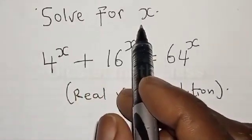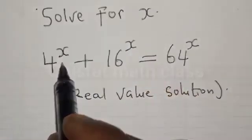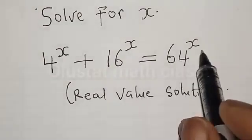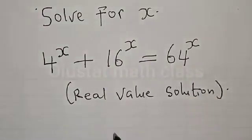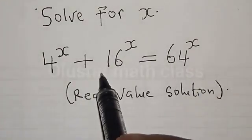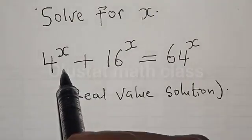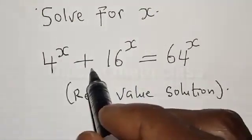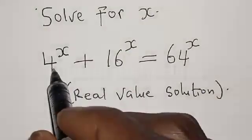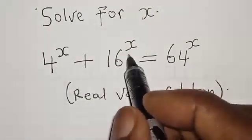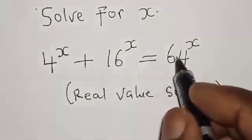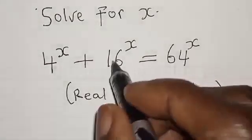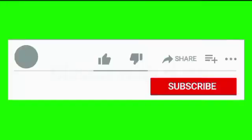Solve for x: 4 raised to power s plus 16 raised to power s is equal to 64 raised to power s. Hi everyone, welcome to my class. In today's class we want to find the value of s from this given exponential equation: 4 raised to power s plus 16 raised to power s is equal to 64 raised to power s. We want to find the real value solution of this given equation.